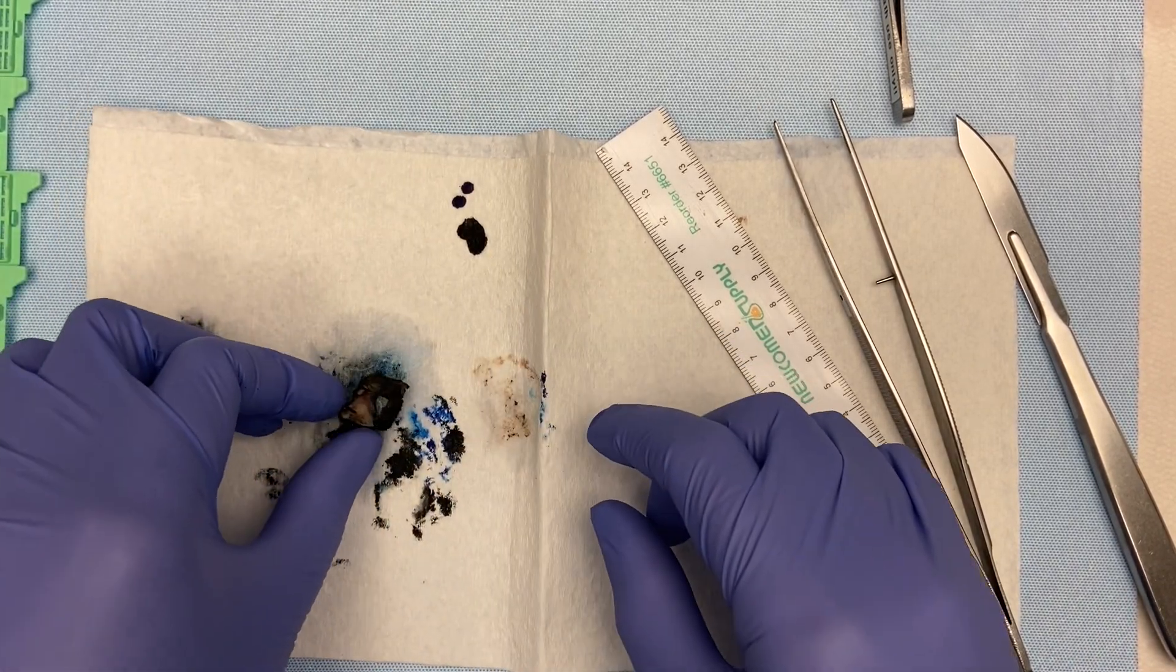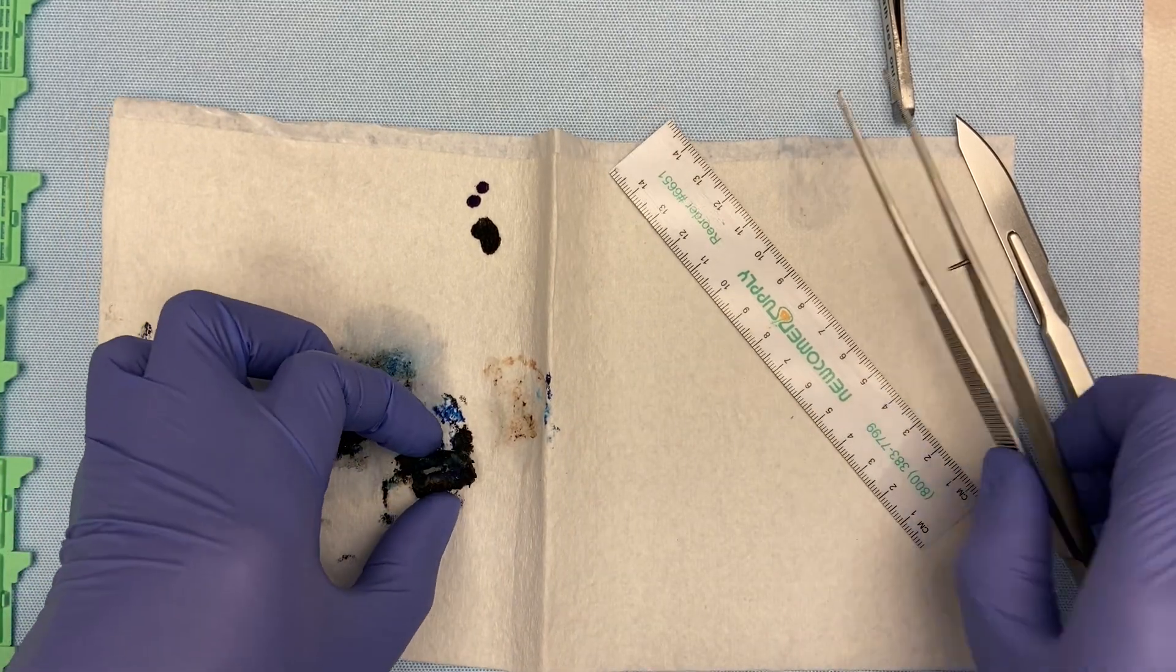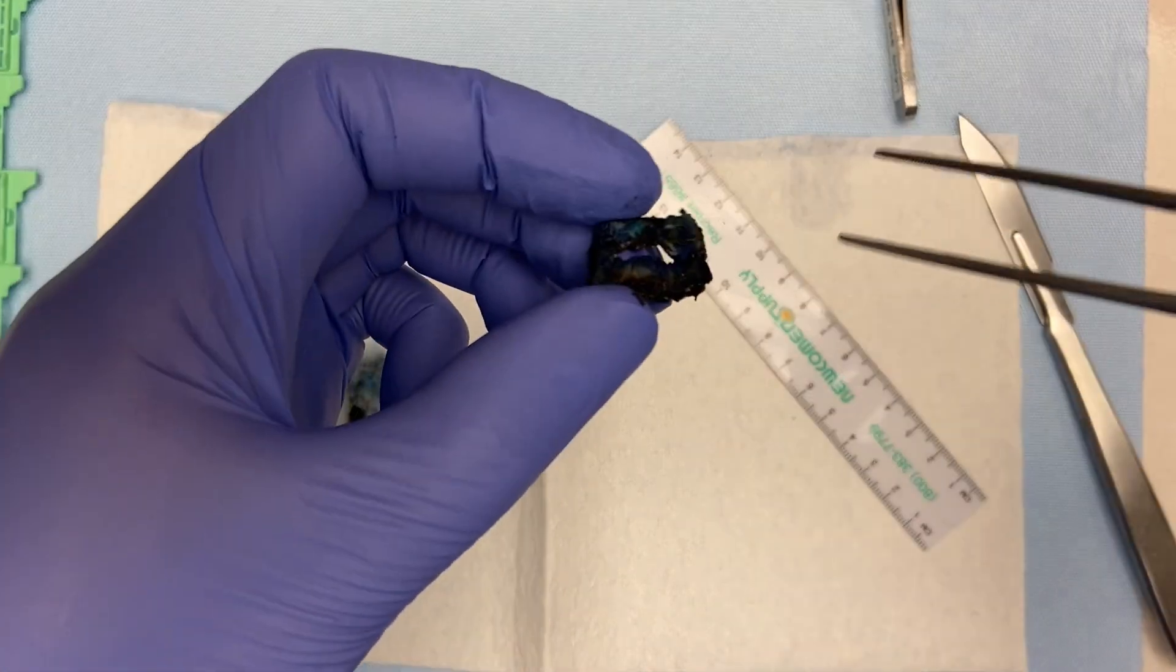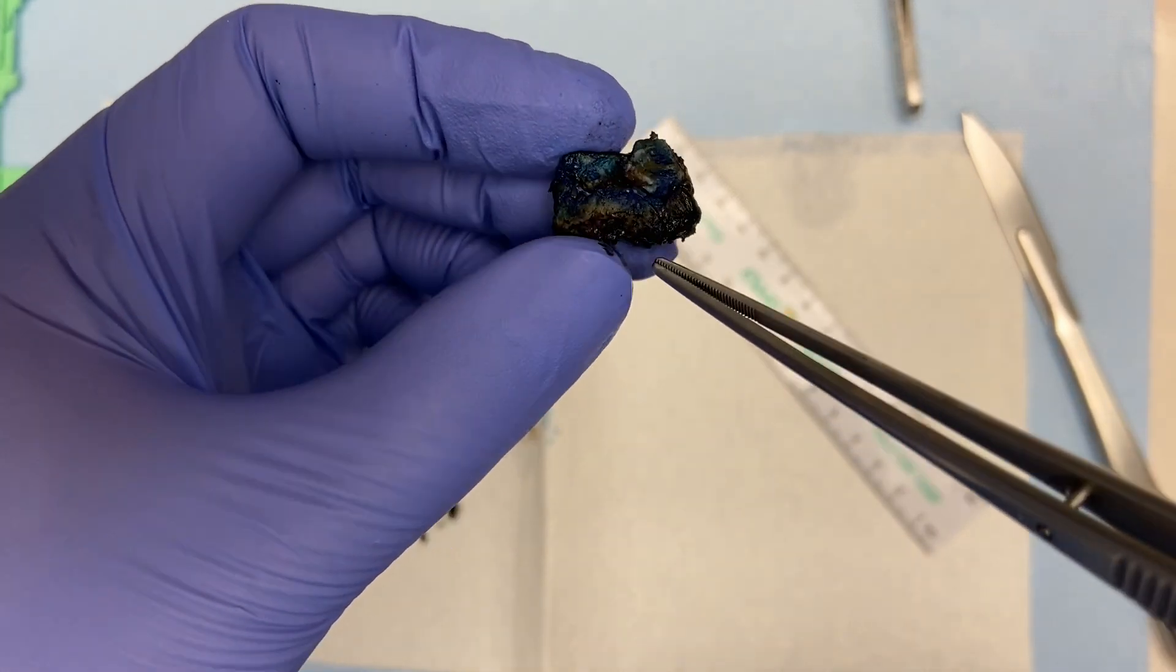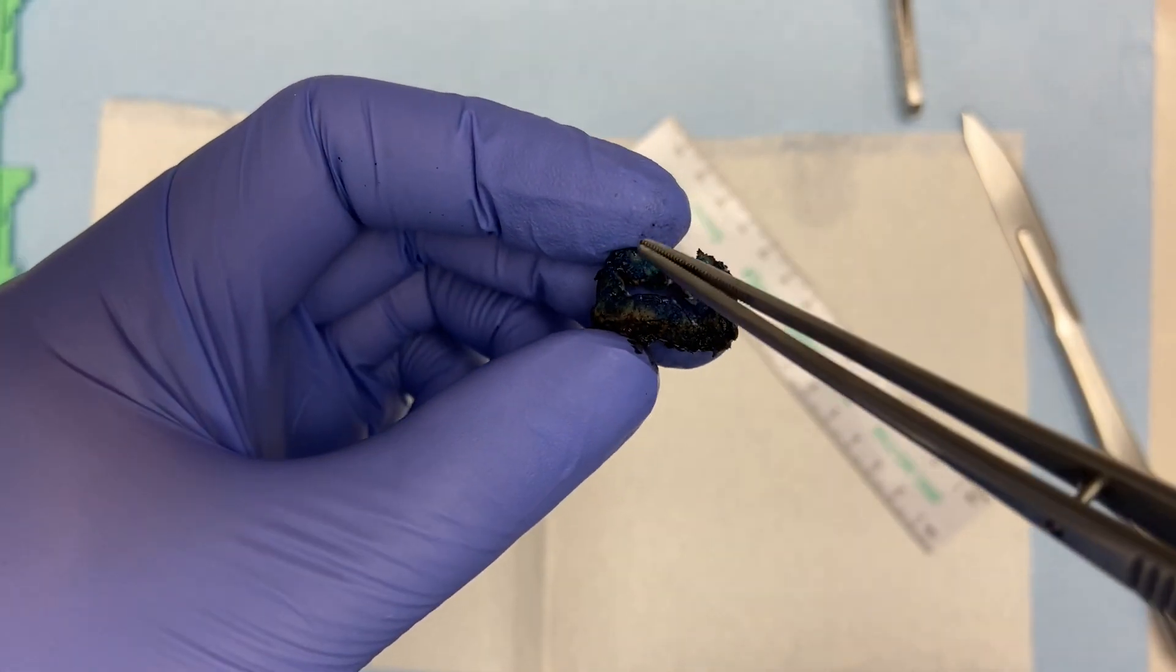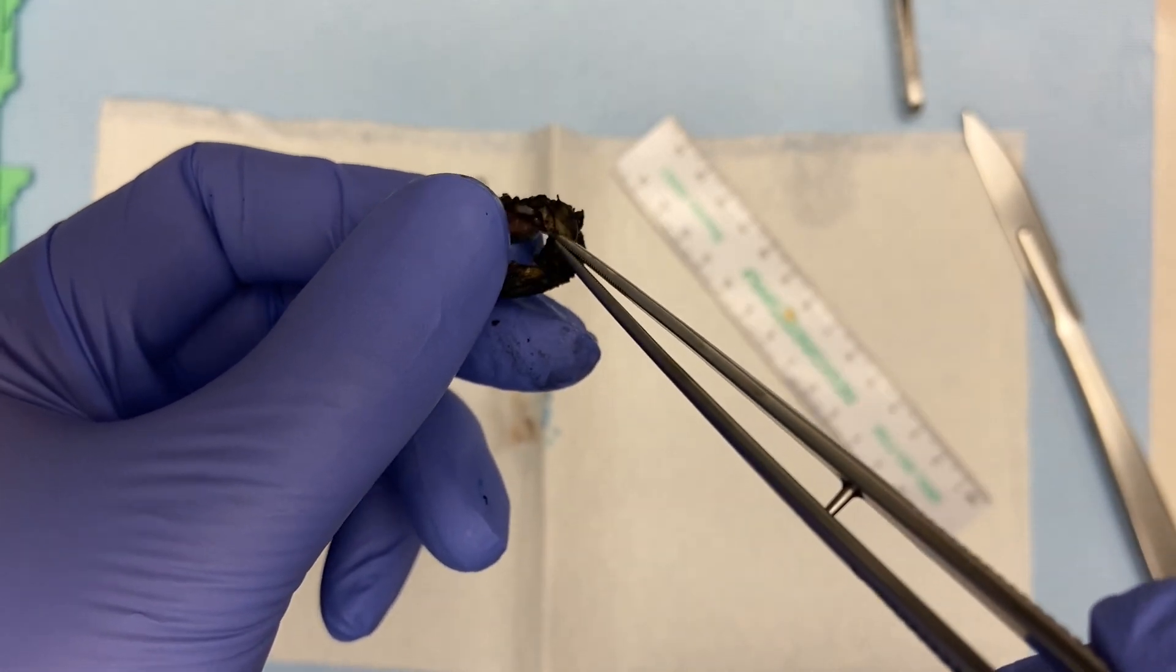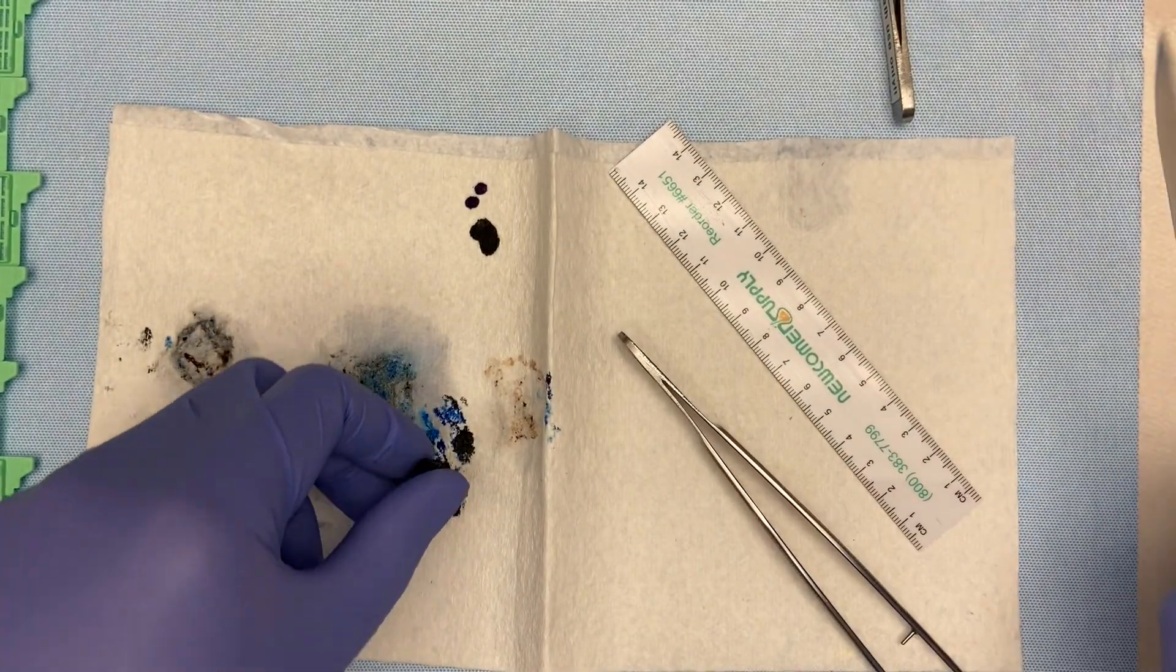So, we've inked the inner endocervical margin blue. We've inked the outer ectocervical margin black. And there's our mucosa in there. And now, I'm going to section it.